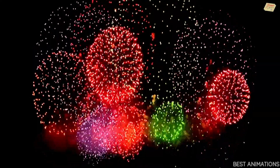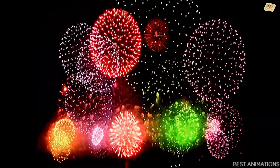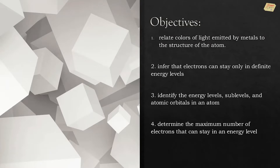Are you now excited to discover more about the atom? Let's begin. The objectives for today are: relate colors of light emitted by metals to the structure of the atom; understand that electrons can stay only in definite energy levels; identify the energy levels, sub-levels, and atomic orbitals in an atom; and determine the maximum number of electrons that can stay in an energy level.